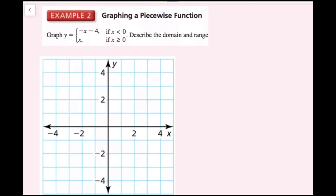For example 2, we want to graph y equals negative x minus 4 if x is less than 0, and y equals x if x is greater than or equal to 0, then describe the domain and range. Both expressions are linear functions, so we'll graph two parts of lines that fit these criteria. Starting with y equals negative x minus 4, which applies when x is less than 0.